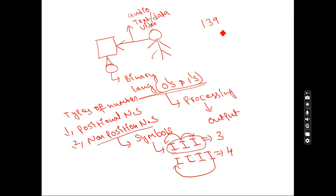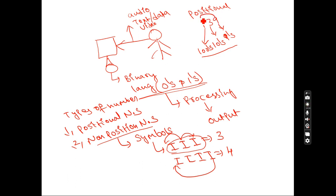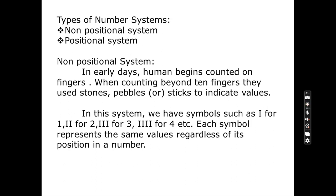Whereas in the positional number system, suppose I'm writing 139 — every digit has a position. Nine is in the ones position, three is in the tens position, and one is in the hundreds position. So if I move 9 from the ones position to the hundreds position, the value becomes 913 instead of 139. The value changes because every digit has a specific position. That is called the positional number system, and we need to discuss more about it.